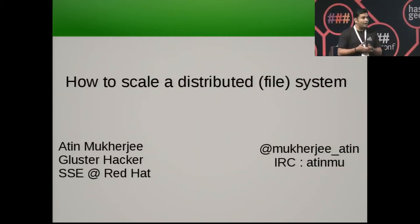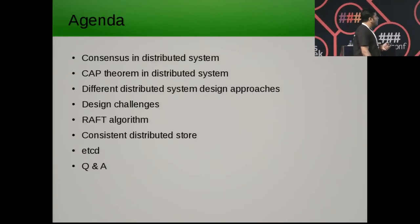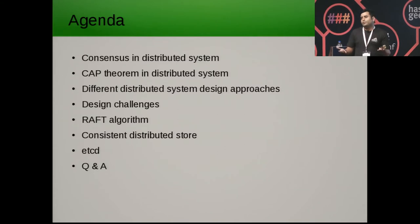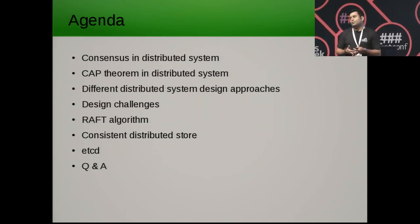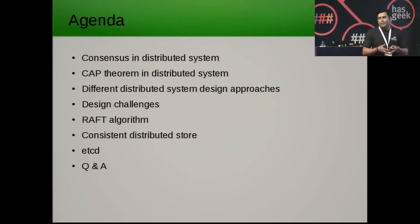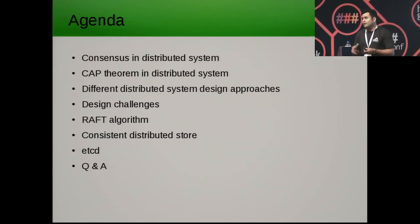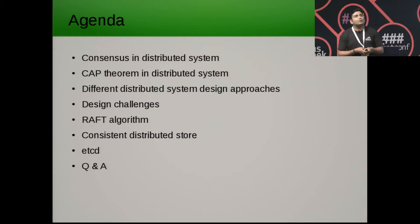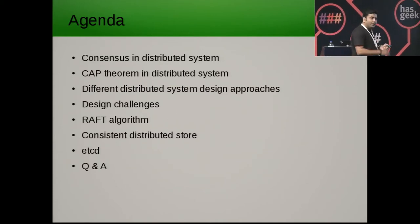My topic is about a distributed system — a distributed file system — and how we can scale it. Going forward, this will be the agenda of what I plan to cover. A few terminologies we need to understand: those involved in distributed systems probably know about consensus and the CAP theorem. Then the major thing in designing a distributed system is the different challenges we face. I'll cover the Raft algorithm and how it can be used in technologies like etcd, Consul, ZooKeeper, and then I'll be happy to take your questions.